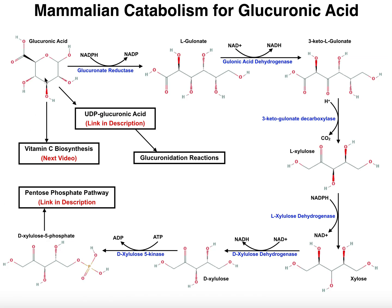Here's the molecule glucuronic acid. Notice it's a derivative of glucose, but this sixth position has been oxidized into a carboxylic acid. The first step of the catabolism for glucuronic acid is reduction and ring opening. This is going to be catalyzed by glucuronate reductase, and it's going to use electrons from NADPH. Essentially, the hydride is going to attack the sixth position, and that's going to open up the ring and create a molecule called L-gulonate.